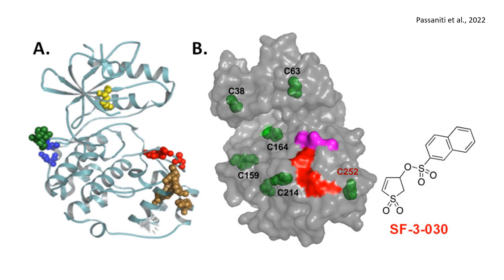These include the D-domain recruitment site (DRS), shown in blue and green, and the F-recruitment site (FRS), shown in brown, which are essential for substrate binding and regulatory interactions. The ATP binding site, shown in yellow, contains a conserved lysine critical for catalytic activity.